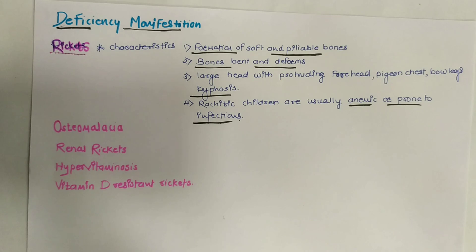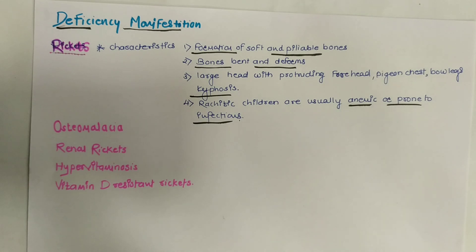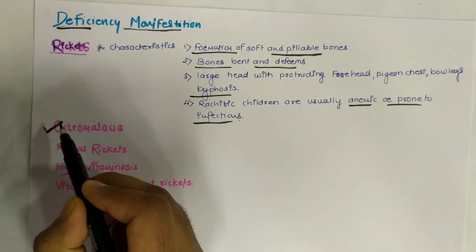Osteomalacia is the deficiency disease occurring in adults. It is characterized by demineralization of previously formed bones, making them soft and susceptible to fracture.